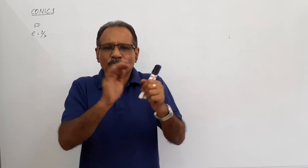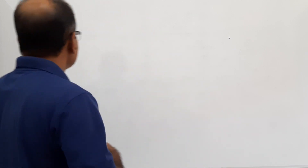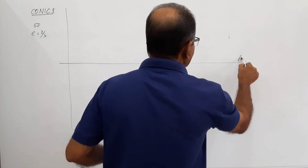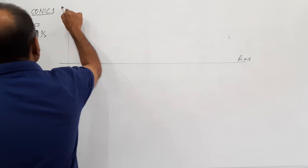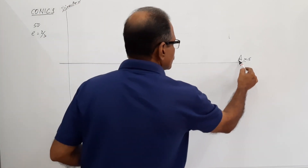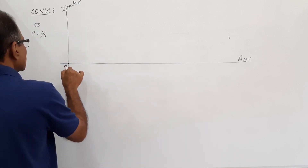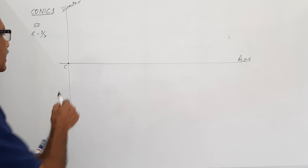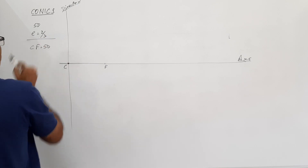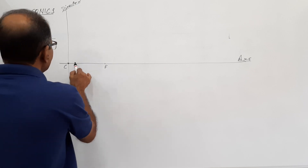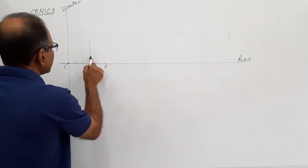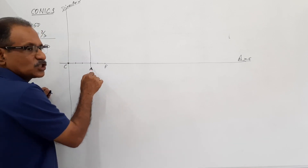What you do first is draw the directrix. This is the directrix — a vertical line. Somewhere in the center, you draw a horizontal line. This is the axis. This point I call C. Then I mark F such that CF is equal to 50mm. Then I divide this CF into 5 equal parts. On the second division, I draw a vertical line. This point is called V.